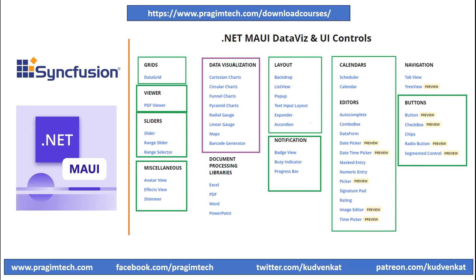In this session, we will focus on data visualization controls available in Syncfusion MAUI Control series. In the 20th session of this tutorial series, we utilized the Employee Rating View component to create sliders with various combinations. We understood numeric sliders, date range sliders, and range sliders to provide a rating for the employee. We concluded that session by creating an interactive Cartesian chart with a range slider. We will explore the Cartesian chart we created with a range slider and explore other example scenarios. Please refer to the 20th session before proceeding further.